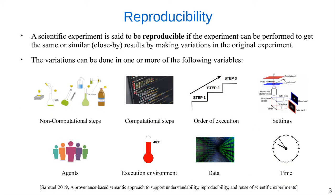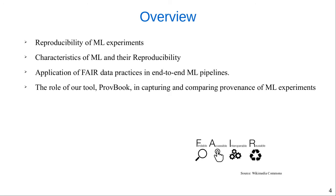We define reproducibility as follows. A scientific experiment is said to be reproducible if the experiment can be performed to get the same or similar results by making variations in the original experiment. The variations can be done in one or more of the following variables: non-computational steps, computational steps, order of execution, data, settings, agents, execution environment, and time. In this paper, we investigate which factors contribute to this crisis and propose first solutions to address some of them.